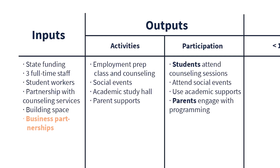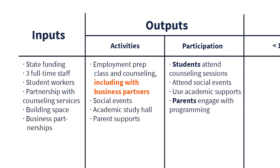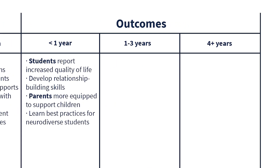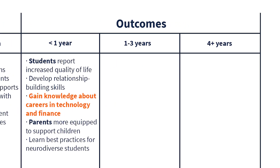Rachel responds: "That's really cool. I might put business partnerships in the inputs category. And then, as part of activities, we might put that underneath your employment class, with participation noting that businesses are participating in the programming you're putting together. For outcomes, the short term might be that your students gained knowledge related to careers in the technology or financial fields. That's a basic example, but we can also talk about the bigger picture of what you're hoping to see from students participating in the program."